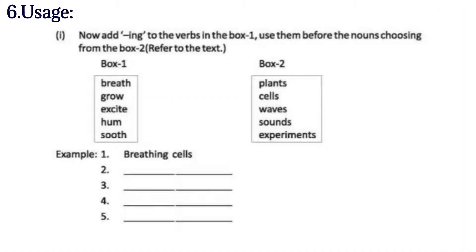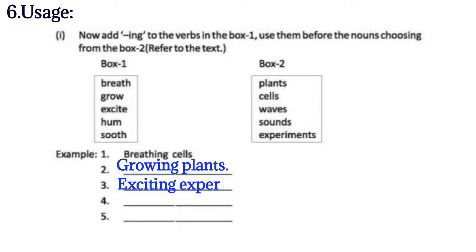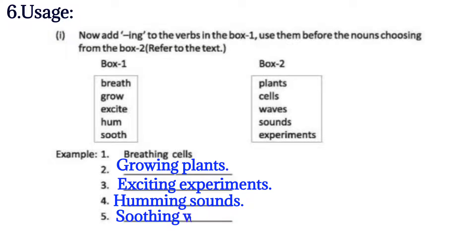Now add '-ing' to the verbs in the box and use them before the nouns, choosing from box two. Refer to the text. Breath → breathing cells. Grow → growing plants. Excite → exciting experiment. Hum → humming sound. Soothe → soothing.